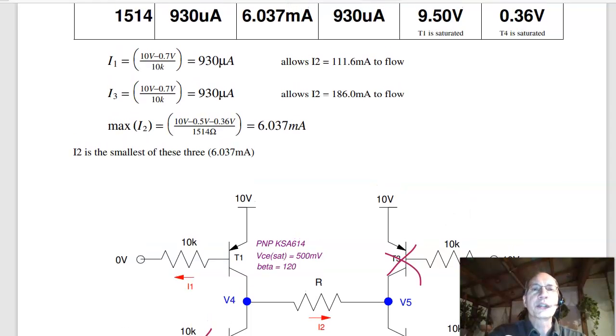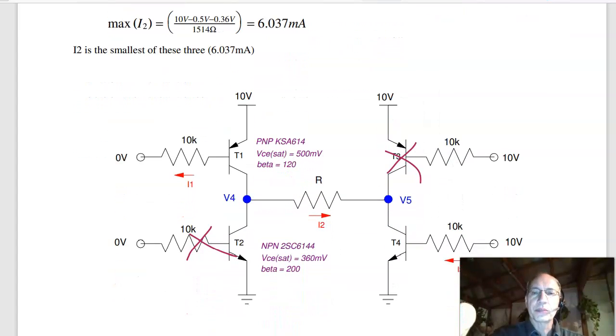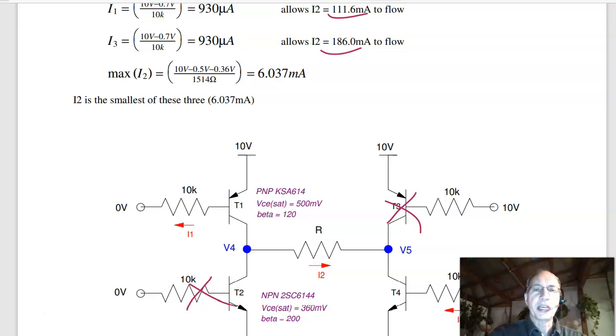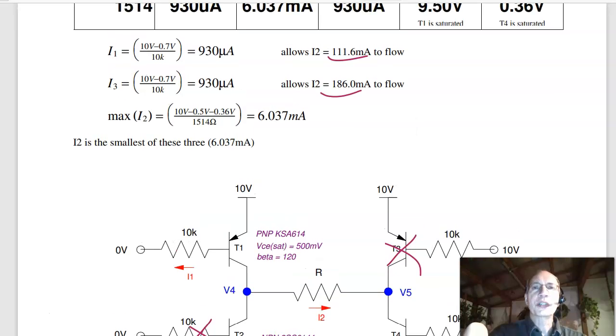The current that they allow is Beta IB. Beta is 120, so transistor 1 limits the current 211 milliamps. Transistor 4, down here, limits the current Beta IB, 186 milliamps. And the resistor R limits the current by 10 minus 0.5 minus 0.36, the remaining voltage across R. That over 1514 ohms is 6 milliamps. So the current is the smallest of these three, and the winner is right here, 6 milliamps.